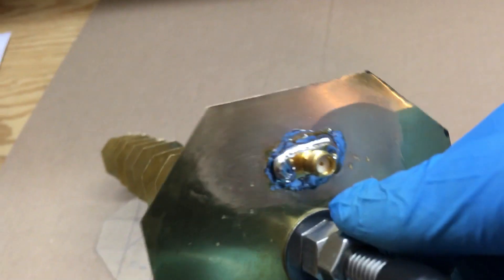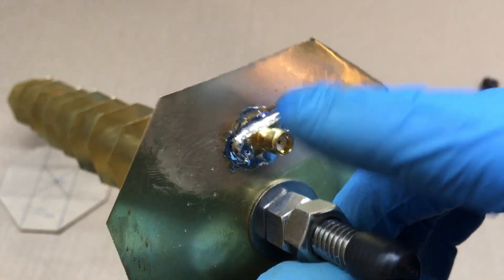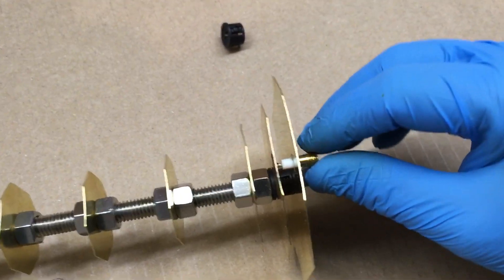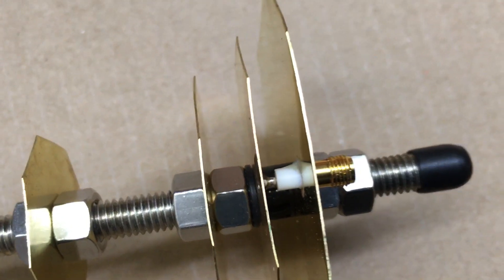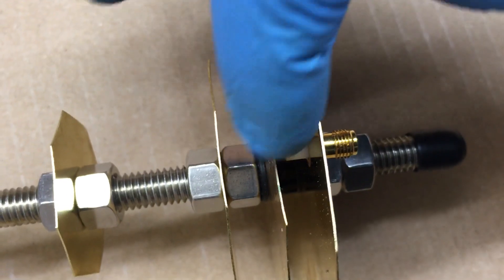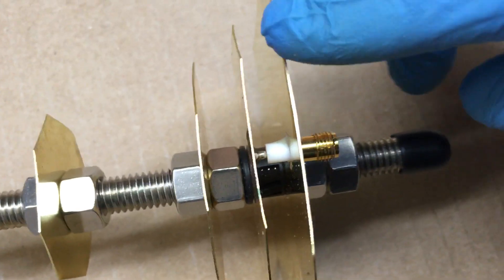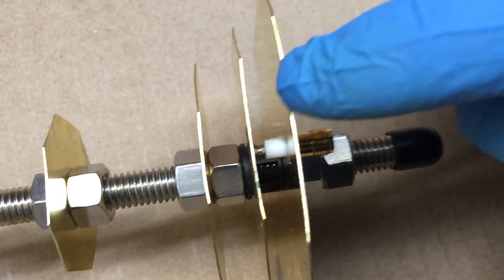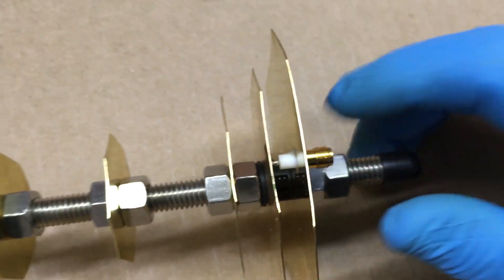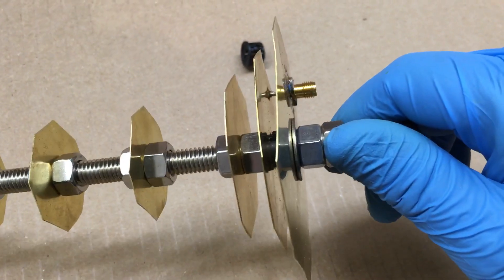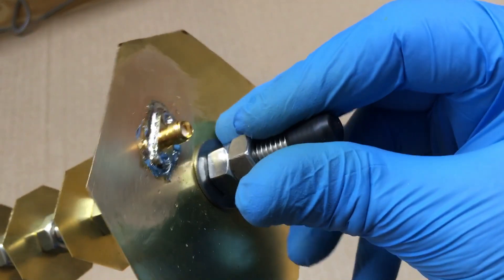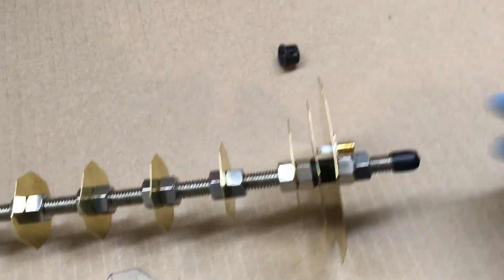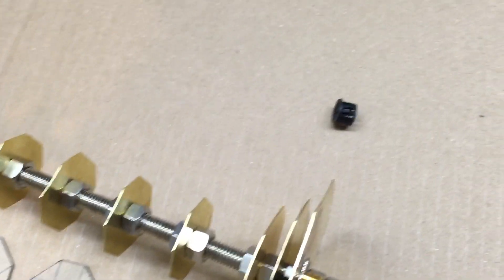Back here I'm using an SMA connector, and the center pin is soldered to this guy here, then the shield of it is soldered to this element here. I added the washer back here compared to my other one I made, the round elements.